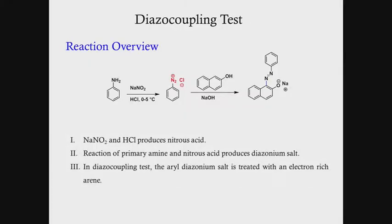Hello everybody. During the experiment we showed you how we can identify primary amine compounds using the diazo coupling test. We took aniline as an example and showed how a beautiful red azo dye forms during the reaction, and from that how we can confirm the presence of primary amines.